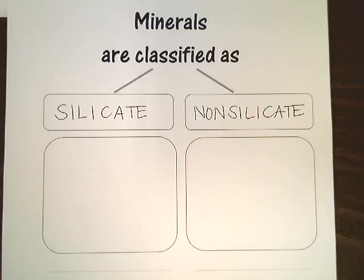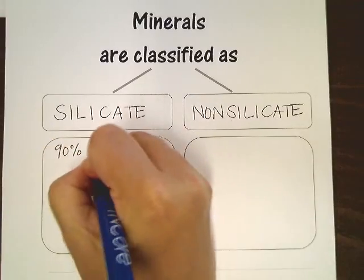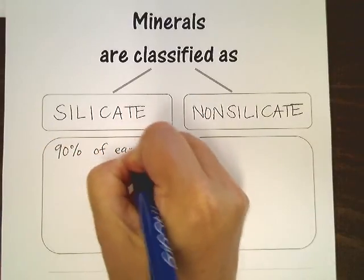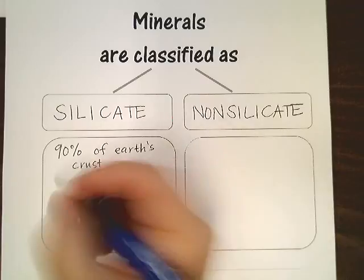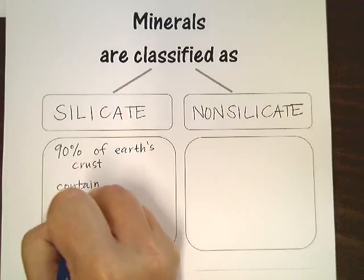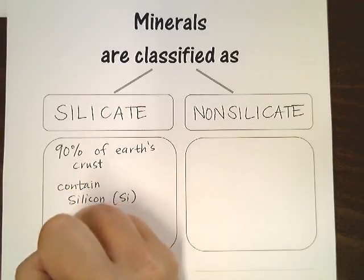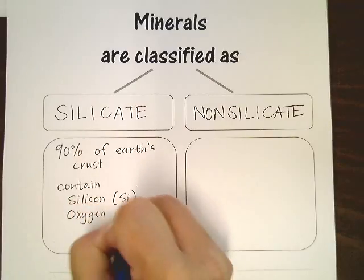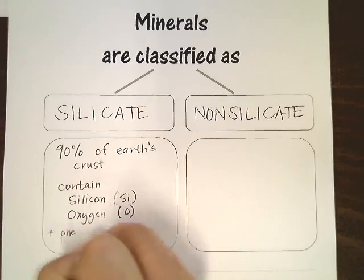Silicate minerals are what you're going to find pretty much everywhere, just digging around, picking up stuff off the ground. 90% of Earth's crust are silicate, and what makes them a silicate is they contain silicon, which is an element on the periodic table — its symbol is Si — and oxygen, symbol capital O, plus one or more metals.